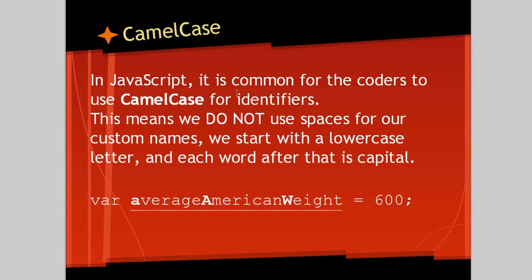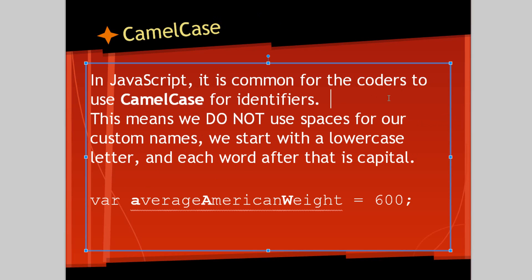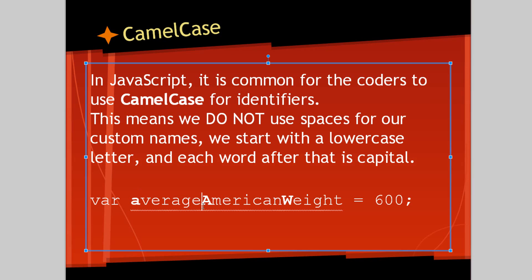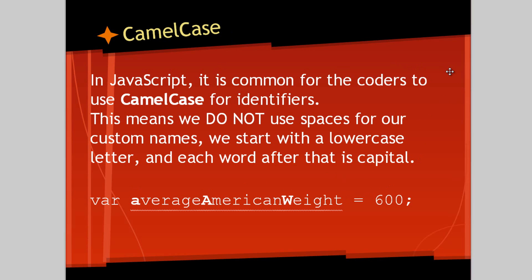In JavaScript, it's common for coders to use what's known as camel case for the identifier names. This means we do not use spaces for our custom names, which we already talked about. We don't use underscores usually either, although you can. We start with a lowercase letter, and each word after that is capitalized. So the first word has a lowercase letter, the second word has a capital letter, the third word has a capital letter. This is just a convention for JavaScript — not required, but if you want your JavaScript to make sense to other programmers, it would probably be helpful if you use camel case.